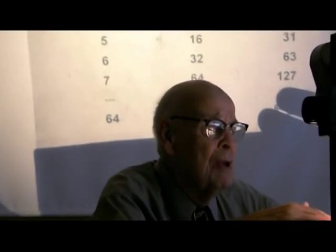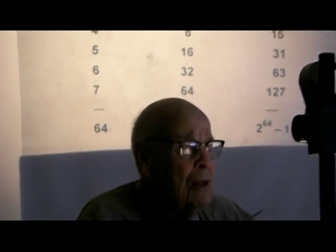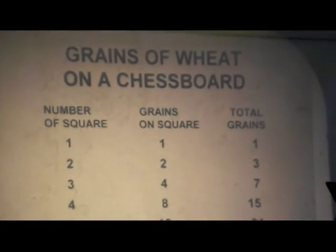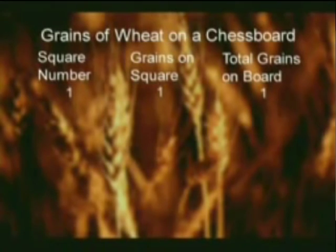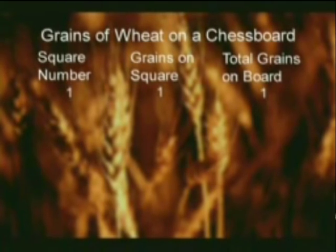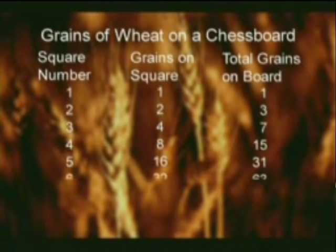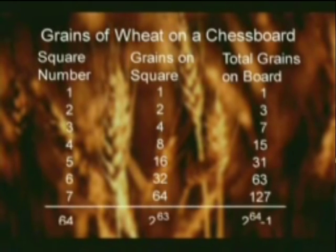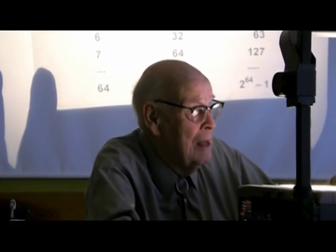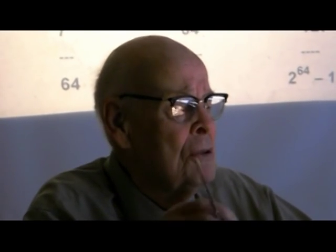Let's look at what happens when we have a number of doublings. Legend has it that the game of chess was invented by a mathematician who worked for a king. The king was very pleased and said, 'I want to reward you.' The mathematician said, 'My needs are modest. Please take my new chessboard and on the first square place one grain of wheat. On the next square, double the one to make two. On the next, double the two to make four. We'll just keep doubling until you double for every square. That will be an adequate payment.' The king thought, 'This foolish man — I was ready to give him a real reward, and all he asked for was just a few grains of wheat.'